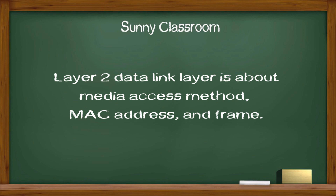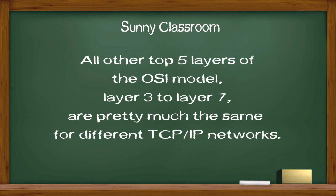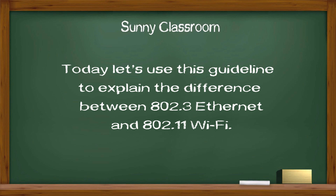Layer 2, Data Link layer, is about media access method, MAC address, and data frame. All other top five layers of the OSI model, Layer 3 to Layer 7, are pretty much the same for different TCP/IP networks.